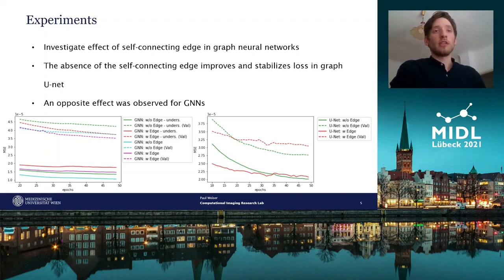In the right figure, the training and validation loss of the graph unit with undersampled data with and without self-connecting edges is plotted. In this case, interestingly, the omitted self-connecting edge leads to a reduced and more stable loss.